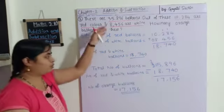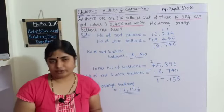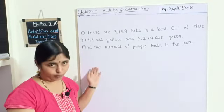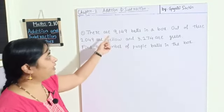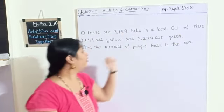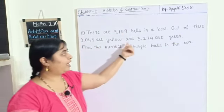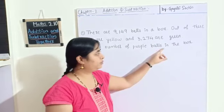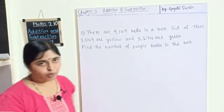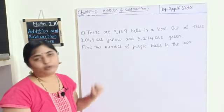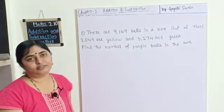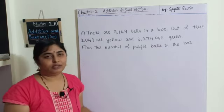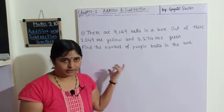Like this we go on solving word problems on addition and subtraction together. Now here is a practice problem: there are 9100 balls in a box. Out of these, 2049 are yellow and 3274 are green. Find the number of purple balls in the box. Try to solve this problem and leave your answer in the comments box. You can also find this problem in the description box.